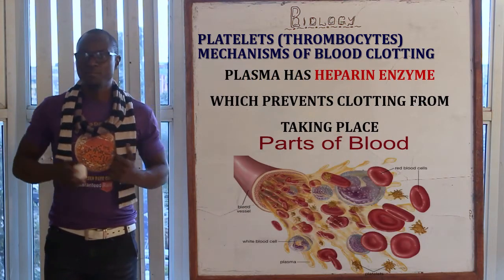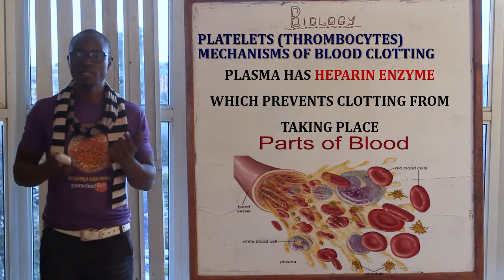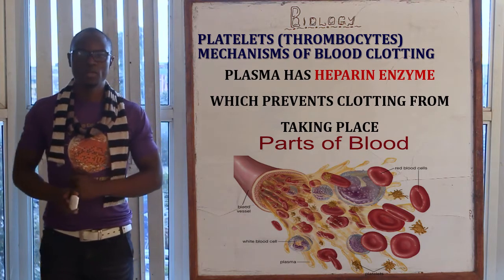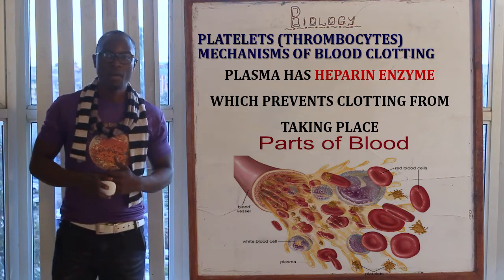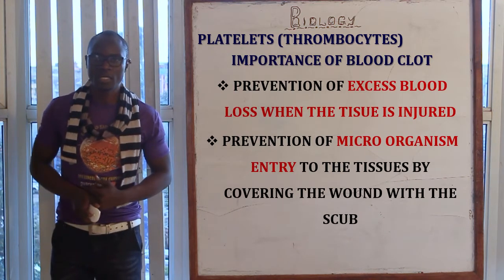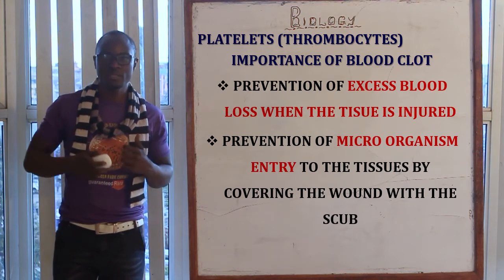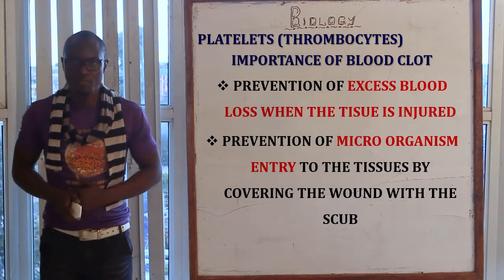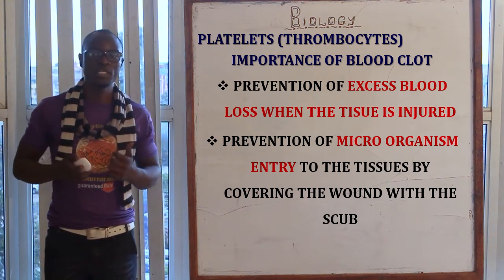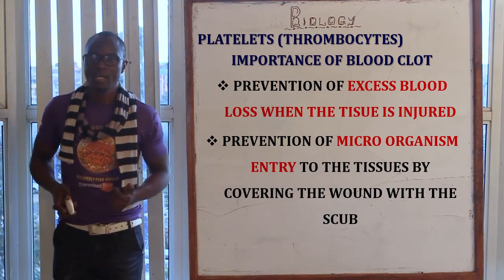It should be noted that blood plasma has different anticoagulant factors known as heparin. This enzyme mainly prevents clotting from taking place, so while platelets organize for blood clotting, the plasma enzyme heparin may come into play and prevent clotting. The importance of the blood clotting process is that it prevents excess loss of blood, and it also prevents different harmful microorganisms from entering into the body tissues.